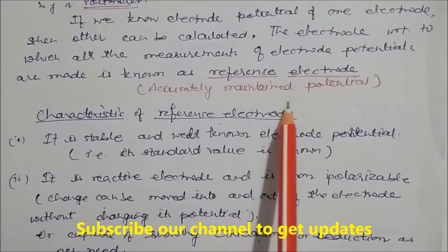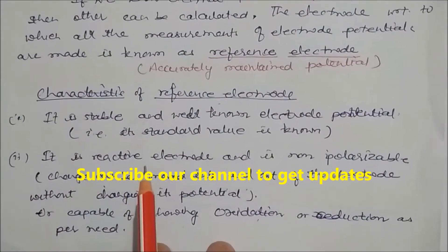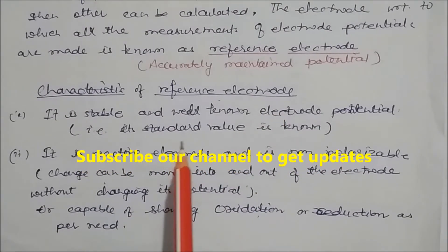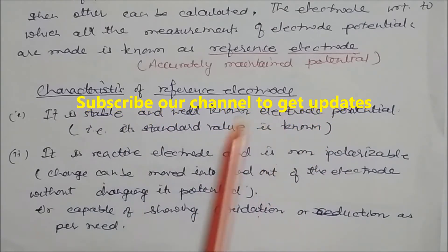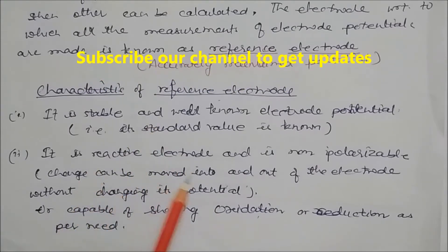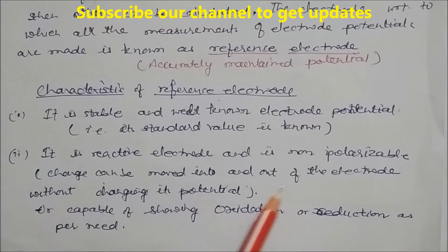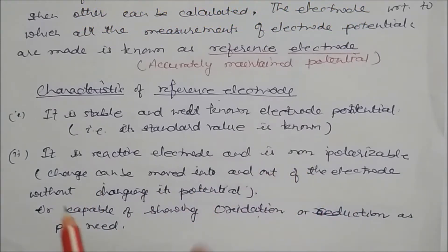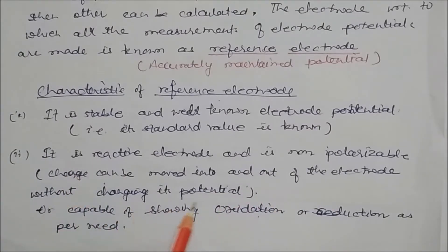This reference electrode accurately maintains a fixed potential. The characteristics of a reference electrode are: it should have a stable and well-known electrode potential whose standard value is known. It must be reactive and non-polarizable — meaning charge can be moved into and out of the electrode without changing its potential. It should be capable of showing oxidation or reduction as needed.